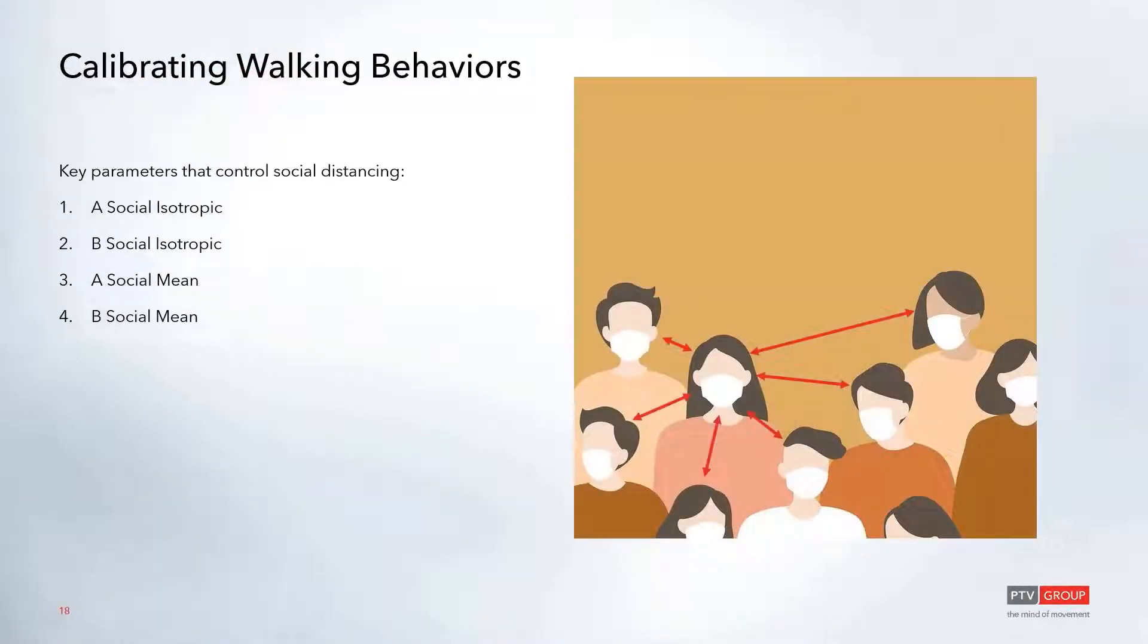The key parameters we're going to be looking at are the A social isotropic, the B social isotropic, the A social mean, and the B social mean. The reason we're talking about these is because social distancing is a large topic right now, and these control the person-to-person interactions most effectively.